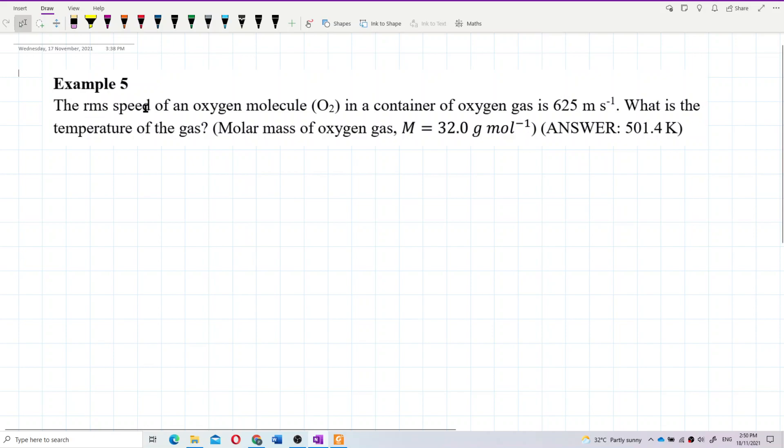The root mean square speed of an oxygen molecule O2 in a container of oxygen gas is 625 meter per second. What is the temperature of the gas? The molar mass of oxygen gas is 32 gram per mole.